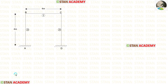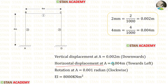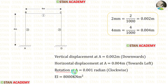In this frame there are no loads. The vertical displacement at point A is given as 2 millimeters, which converts to 0.002 meters, acting downwards. The horizontal displacement at point A is 4 millimeters, which is 0.004 meters, acting towards the left side. The rotation at point A is 0.001 radians, acting clockwise. The flexural rigidity EI is given as 8000 kN·m².